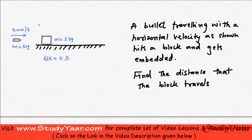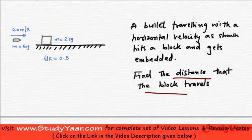Let's look at a bit complex example. Over here we have a bullet which is traveling horizontally. This bullet hits this stationary block and what we have to find is the distance that this block travels.